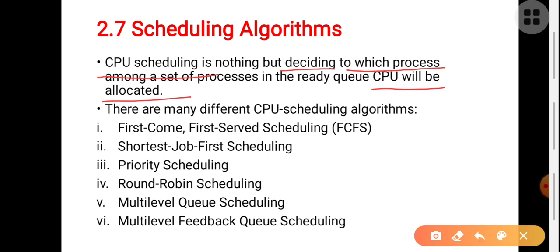There are many CPU scheduling algorithms. The first one is First Come First Served, that is FCFS. Second is Shortest Job First scheduling. Third is Priority scheduling. Fourth is Round-Robin scheduling. Fifth is Multi-level Queue scheduling. Sixth is Multi-level Feedback Queue scheduling. Among these, the most commonly used are FCFS, Shortest Job First, and Round-Robin scheduling.